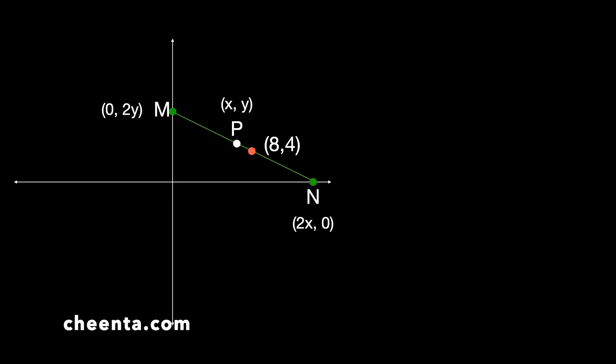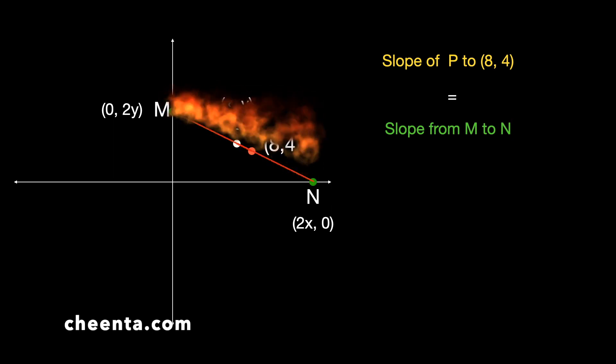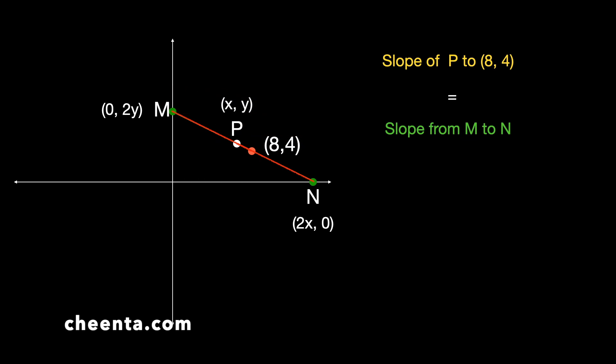The question is: as P moves, what is it that does not change? Whatever does not change will help us find an equation — a locus — for point P. Look at the slope of the line segment from P to (8, 4), and notice that the slope of MN must equal the slope from P to (8, 4), whatever the position of MN. That is our invariant.